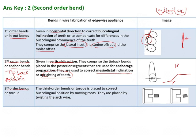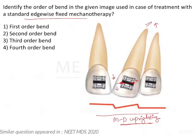The third type are torque bends, made by placing a twist in the wire. The wire starts flat with no twist, then is twisted to express torque — that is, to correct the buccolingual inclination of the root or the root position. Coming back to our original example, the bend shown is correcting mesiodistal uprighting of teeth, making it a second order bend.